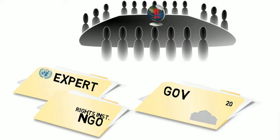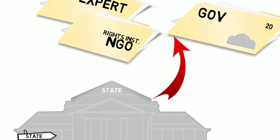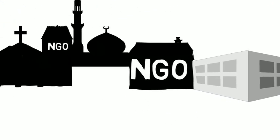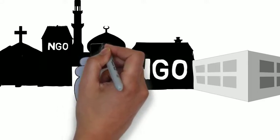The government report is 20 pages long, so really quite short. In it, the government describes how they see the human rights situation in the country and what they've done to implement the recommendations made by the Human Rights Council when it last reviewed the report.